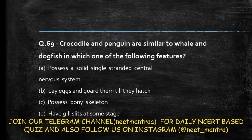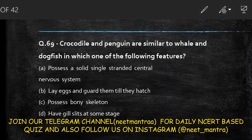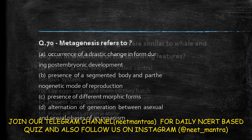Next question: crocodile and penguin are similar to whale and dogfish in which feature? Options are: possesses a solid single-stranded central nervous system; lay eggs and guard them till they hatch; possess bony skeleton; have gill slits at some stage. The common similarity among crocodile, penguin, whale, and dogfish is that all of them show gill slits at some stage of their life cycle. So the answer is option D.